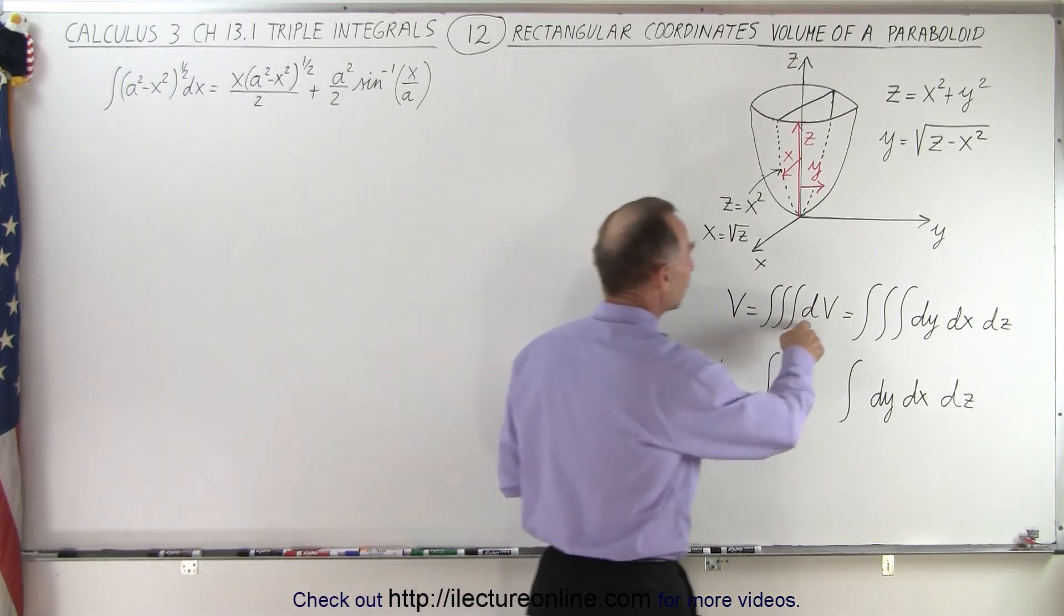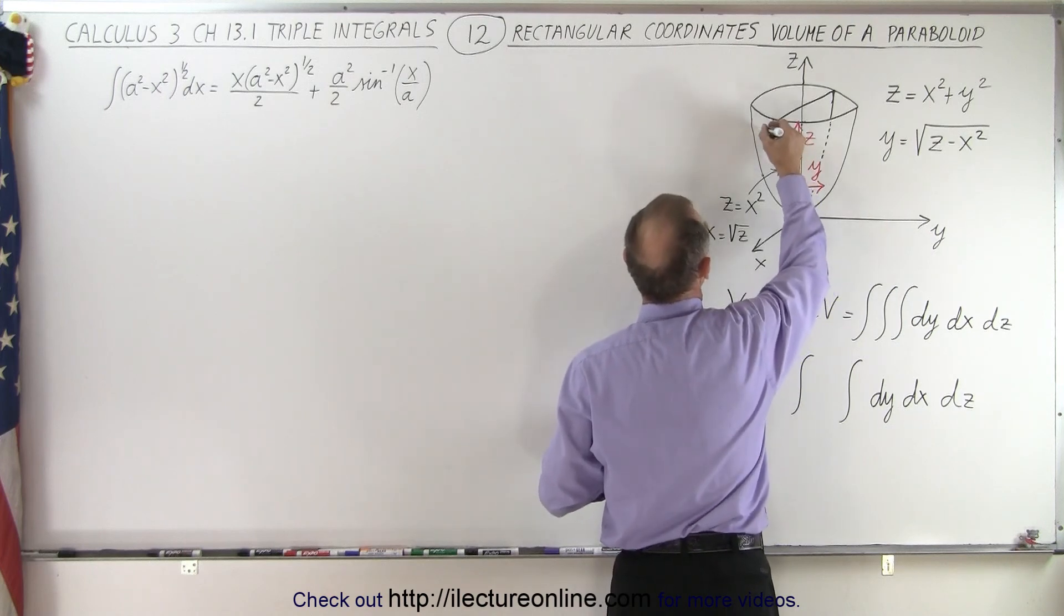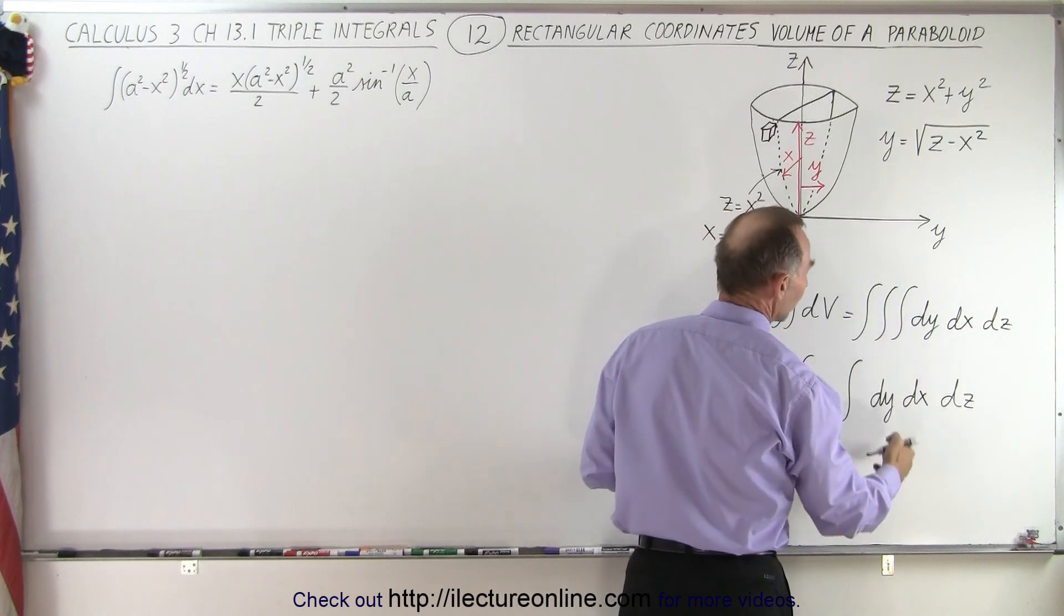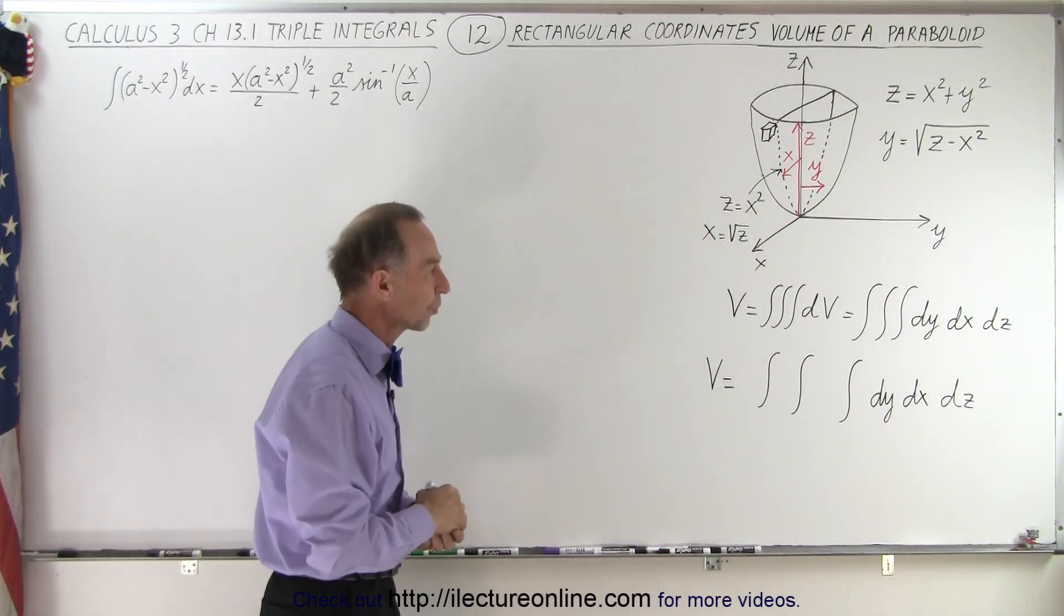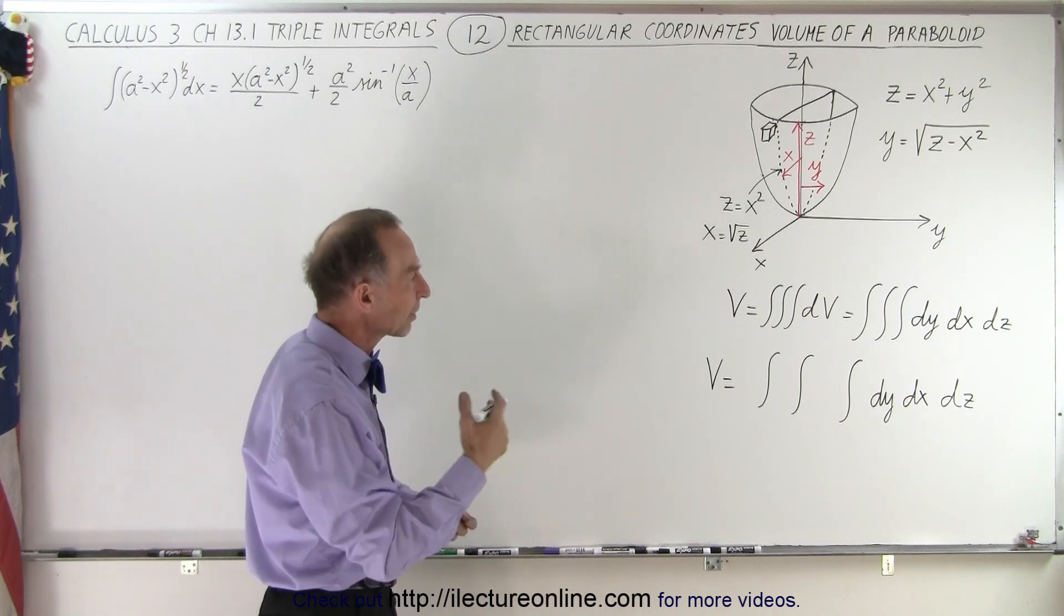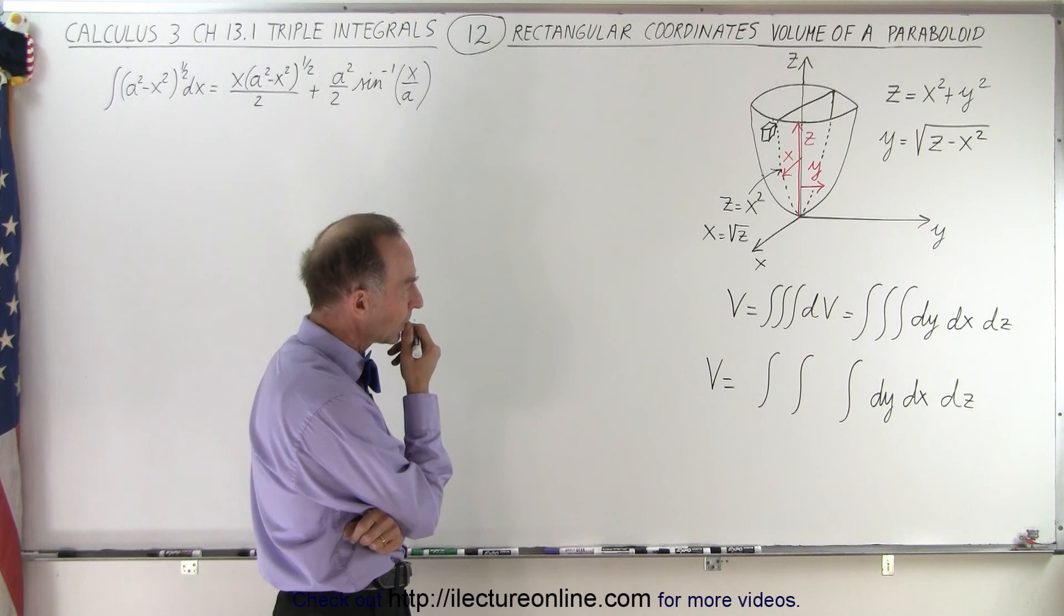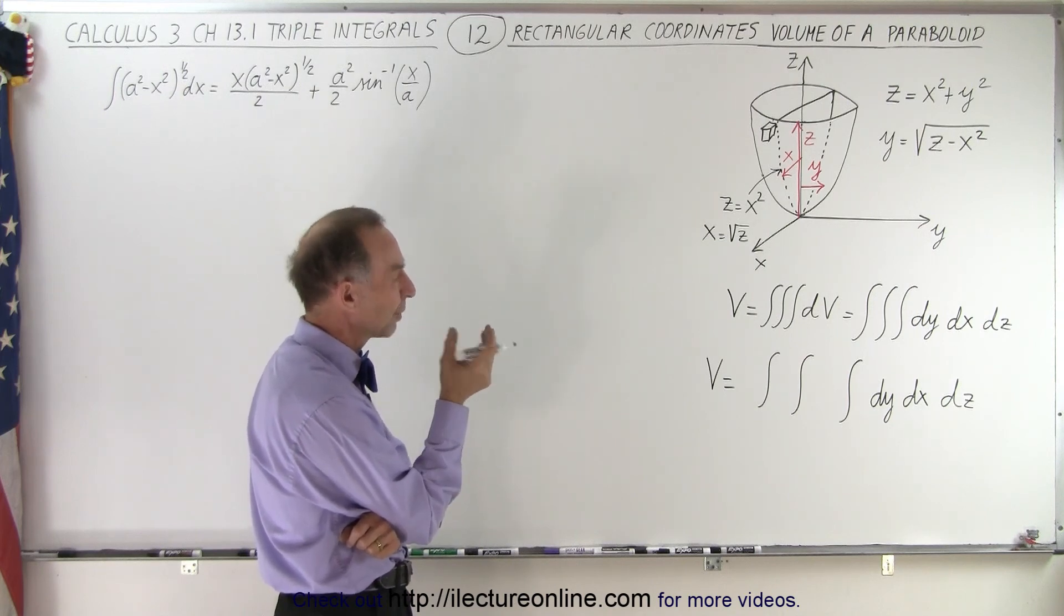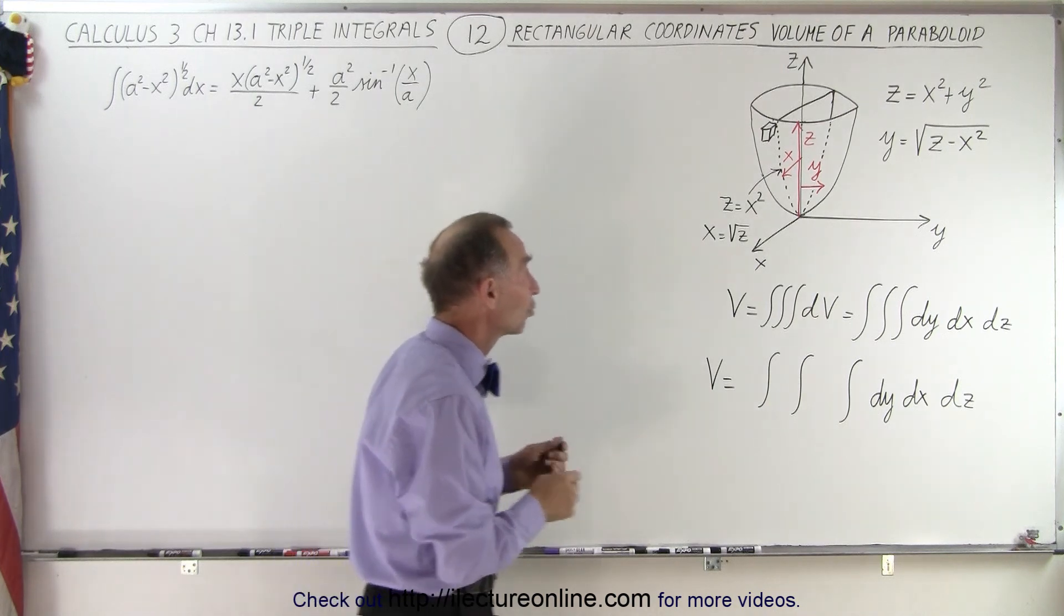So we're going to integrate over all the little dv's. dv's of course are just small volume elements like this and the dv would be dy dx dz or whatever order it is, it's simply the product of those three dy dx dz limits. So let's see here. Which one should we do first? Well before we decide that let's take a look and see what the integration limit should be.